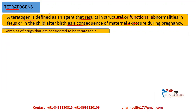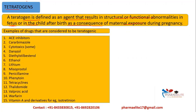Examples of drugs considered to be teratogenic include: ACE inhibitors (angiotensin converting enzyme inhibitors), carbamazole, cytotoxic drugs, danazol, diethylstilbestrol, ethanol, lithium, misoprostol, penicillamine, phenytoin, tetracyclines, thalidomide, valproic acid, warfarin, and vitamin A and its derivatives like isotretinoin. We will discuss each of these in detail.